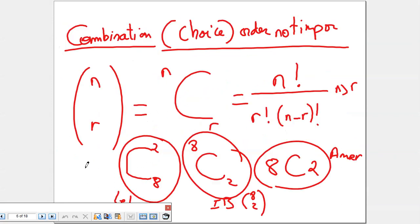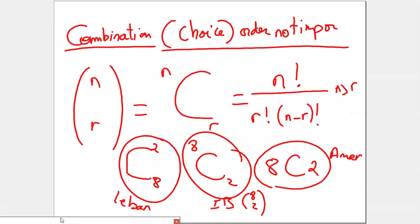Now the combination formula. Combination means choice — the order is not important. For example, I want to choose two girls from this class; I don't care who I picked first, only about the result. The notation can be written as nCr or C(n,r). The formula is factorial n over factorial r times factorial (n minus r). In the Lebanese program we write it one way, in IB we write the biggest number on top, and in the American program it's written slightly differently.